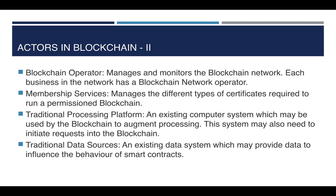The blockchain operator manages and monitors the blockchain network — each business in the network has one. Membership services manage the different types of certificates required to run a permissioned blockchain; we have seen something called MSP and will discuss it further in coming lectures. A traditional processing platform is an existing computer system that may be used by the blockchain to augment processing and may also need to initiate requests into the blockchain. Traditional data sources are existing data systems that may provide data to influence the behavior of smart contracts.